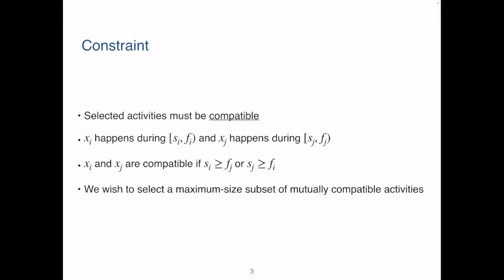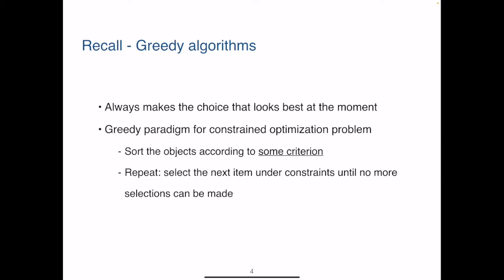First, selected activities must be compatible, meaning they cannot happen in overlapping times. Specifically, given two activities XI and XJ, we consider the starting time being inclusive and the finish time being exclusive. XI and XJ are compatible if either of these two conditions are satisfied. Our goal is to select a maximum size subset of mutually compatible activities, meaning all selected activities must be compatible pairwise.